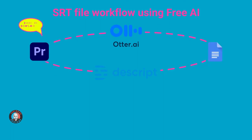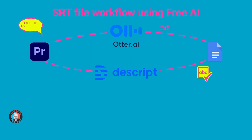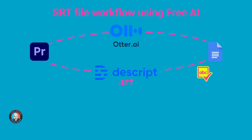We're then going to take that transcript, proofread it, and once that's done, bring it into Descript. In Descript we're going to use a free function that's going to match or sync the transcript to the source file, and that's going to create an SRT — a file which contains all the text and timecode information for each specific caption block.